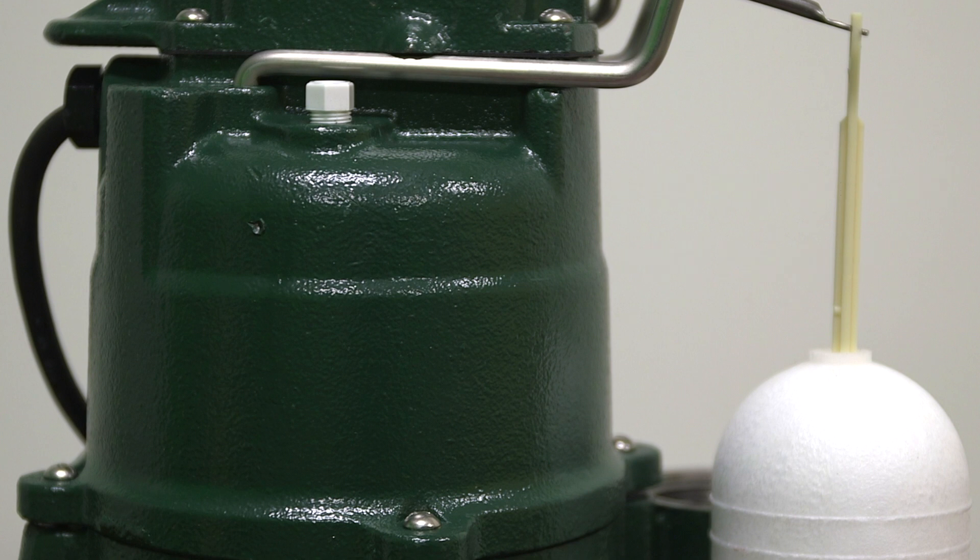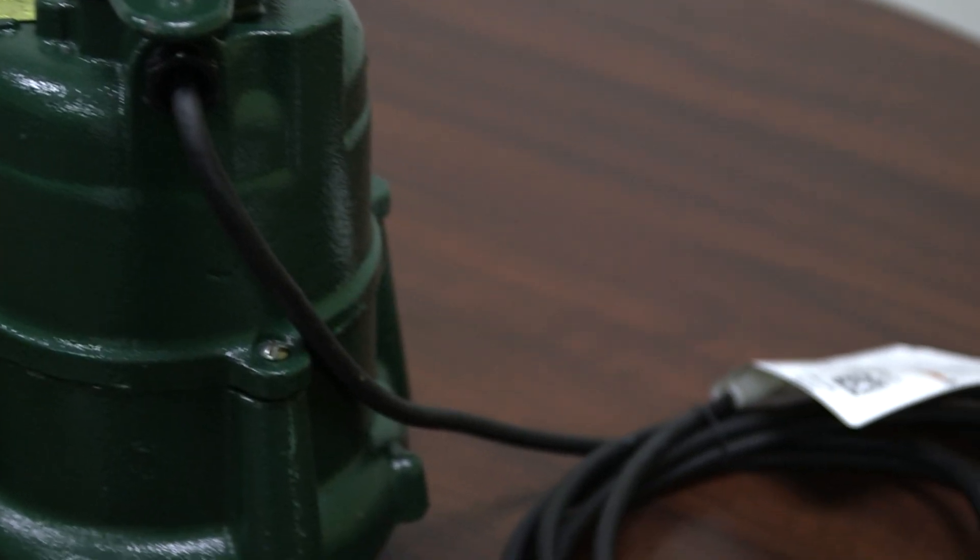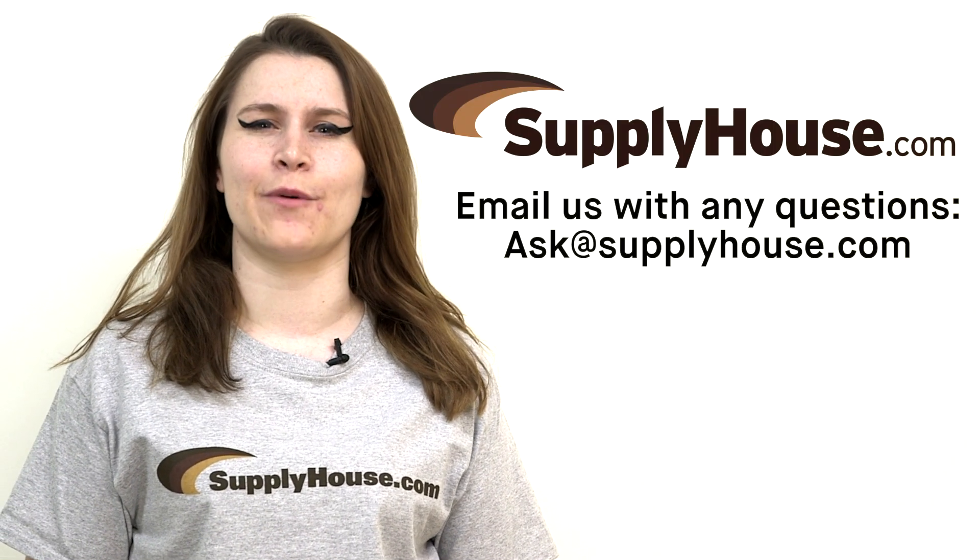The Model M98 includes oil fed cast iron bearings and a non-clogging vortex impeller. The M98 comes standard with a 15 foot cord but a 25 foot cord model is also available. For more information, visit the resources at supplyhouse.com or email us with any questions.